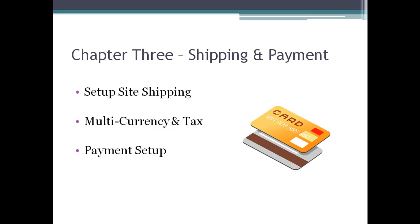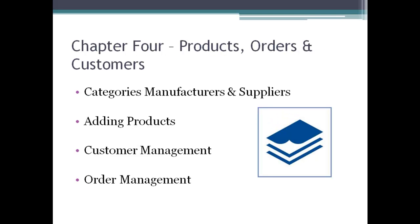Chapter three will be shipping and payment. I initially planned to do adding products and categories first, but I found it's easier to get the shop configured so it'll work, and then move on to adding products and categories. In this chapter we'll set up shipping and carriers, deal with multi-currency and tax, and implement PayPal as well as go over our other payment system and payment gateway options.